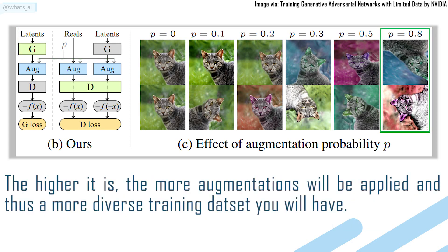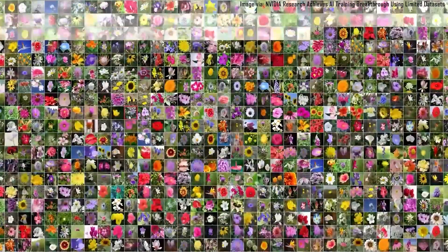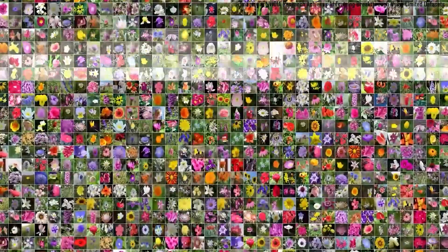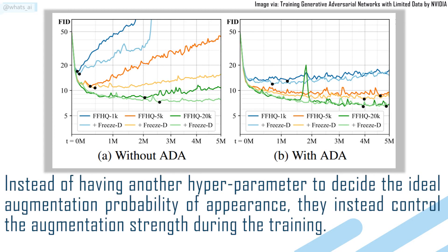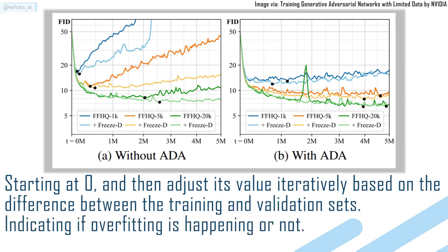The higher the probability, the more augmentations will be applied and thus a more diverse training dataset you will have. They found that while this was solving the question of limited amount of training images, there was still the overfitting issue that appeared at different times based on your initial dataset size. This is why they thought of an adaptive way of doing this augmentation — instead of having another hyperparameter to decide the ideal augmentation probability, they instead control the augmentation strength during training, starting at zero and then adjusting its value iteratively based on the difference between the training and validation sets, indicating if overfitting is happening or not.